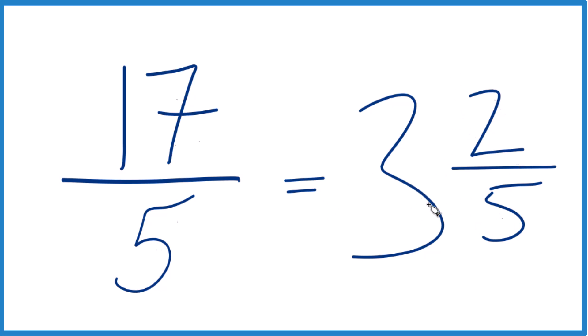We can check that because 3 times 5, that's 15. 15 plus 2, that's the 17, and the 5, that just stays the same there. 17 fifths.